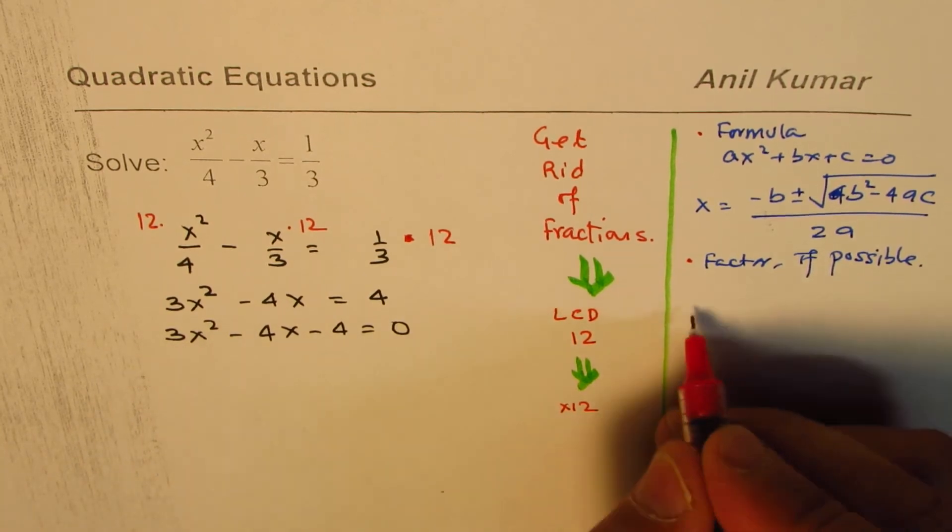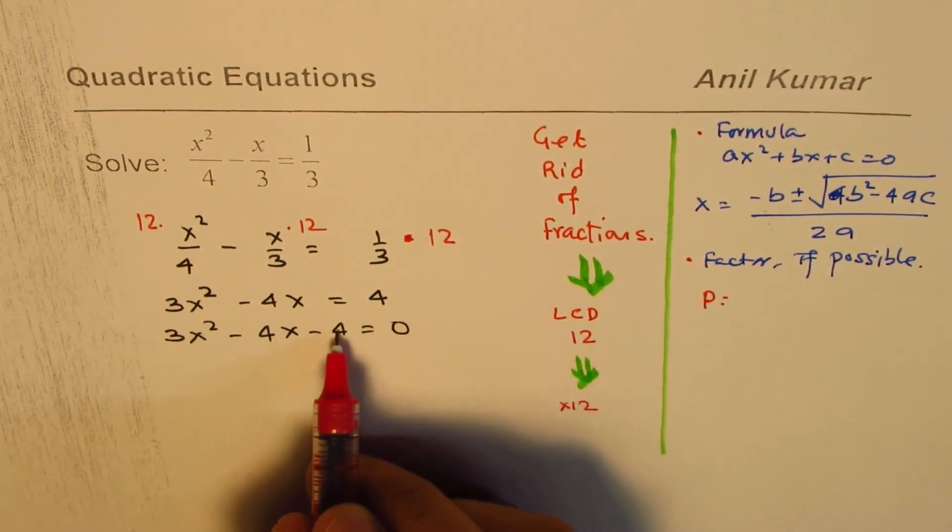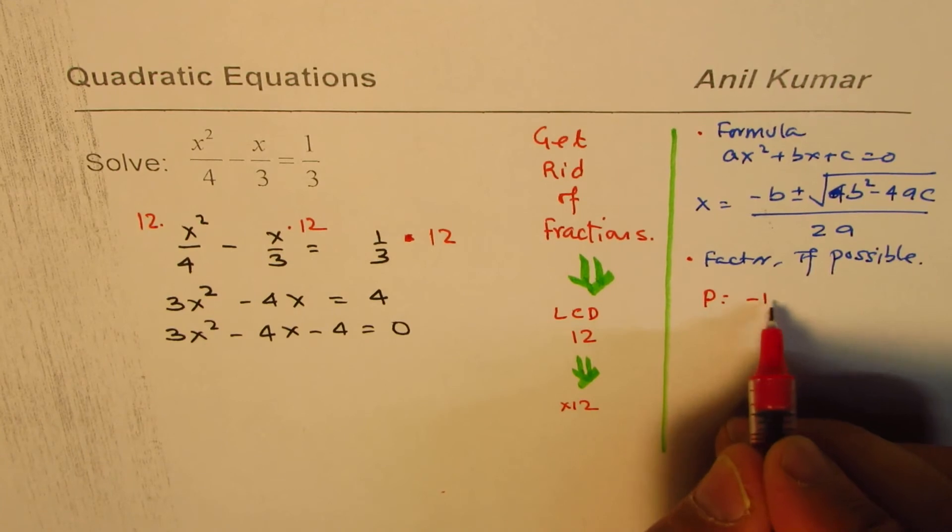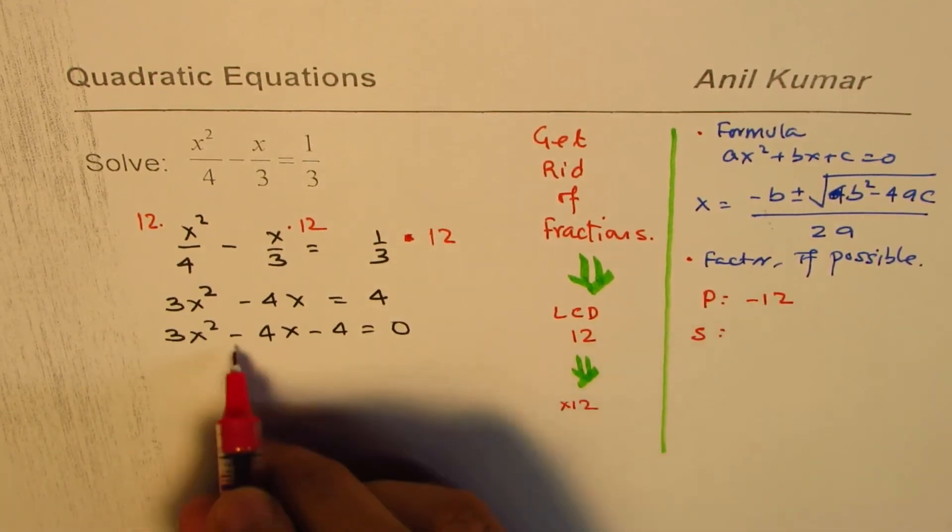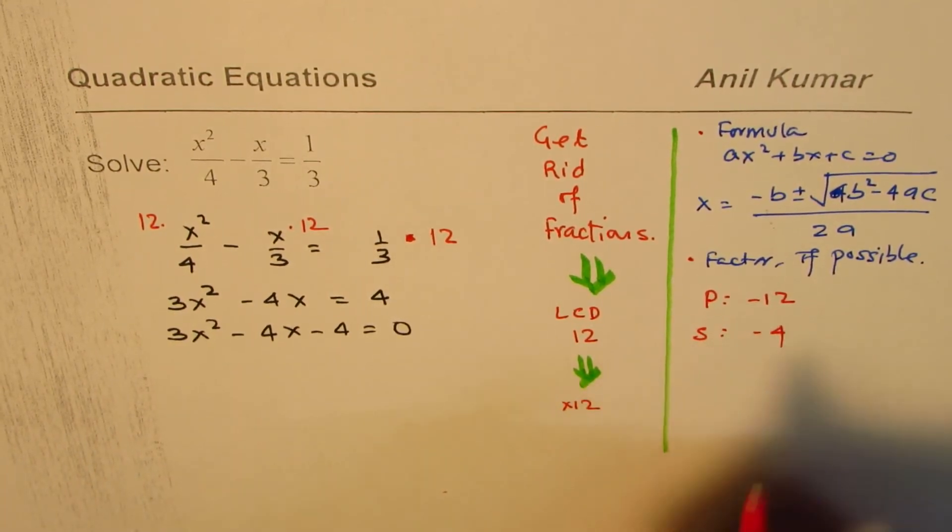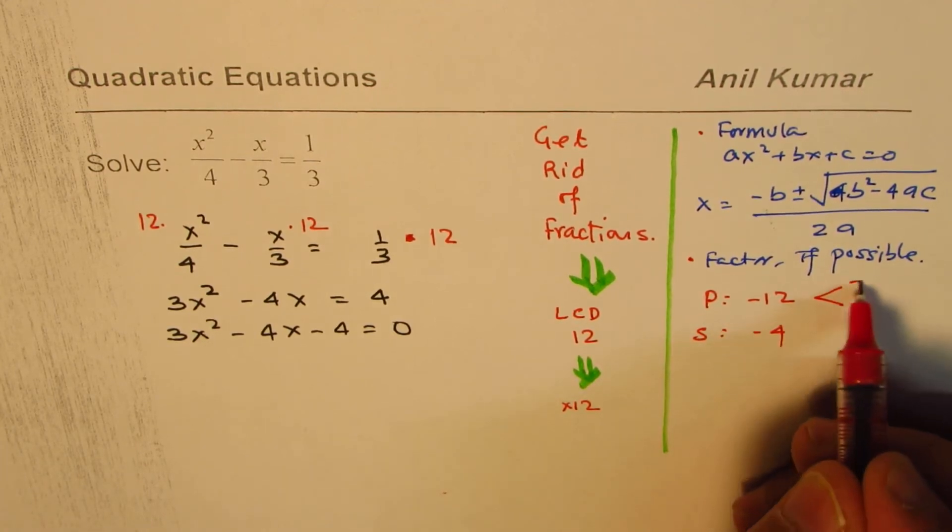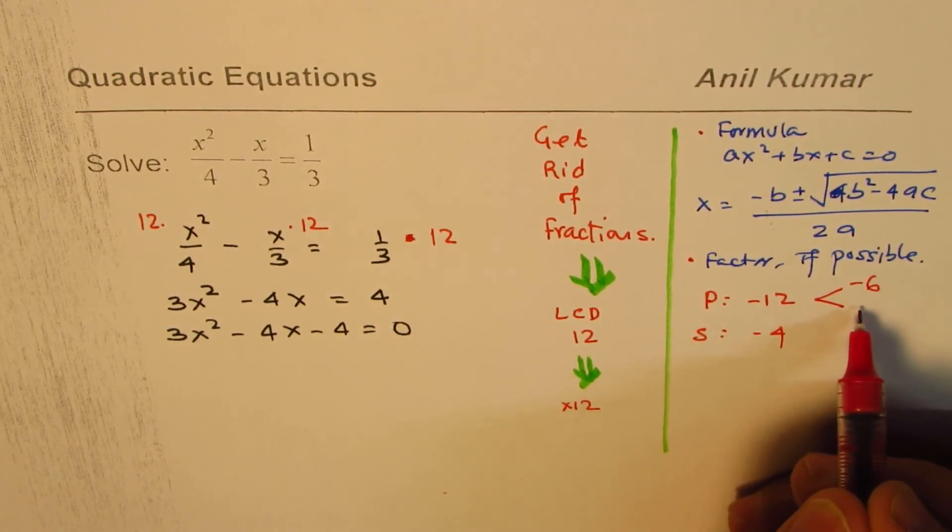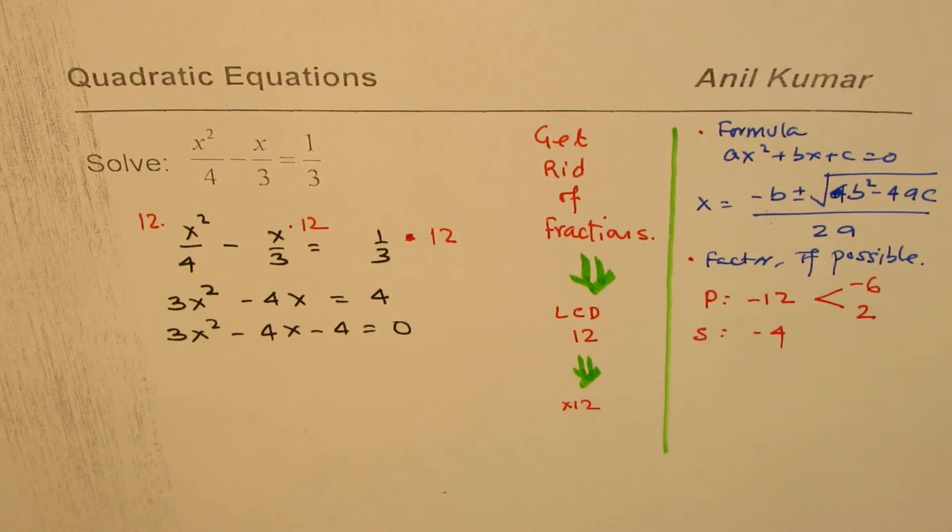We are looking for a product of minus 4 times 3, which is minus 12, and sum of minus 4. So the two terms could be bigger term is minus 6, smaller term is plus 2. Those are the two terms.